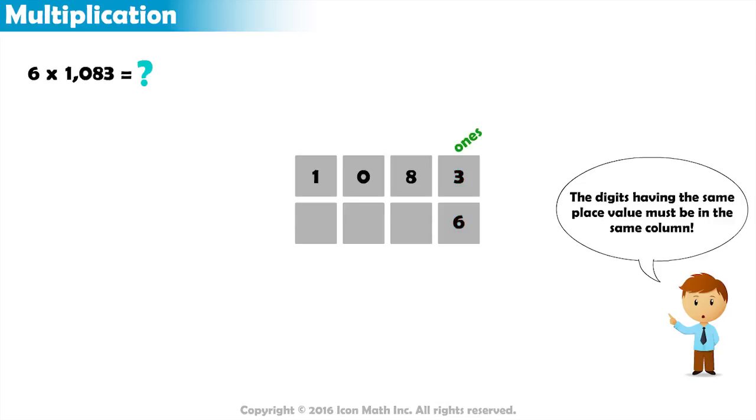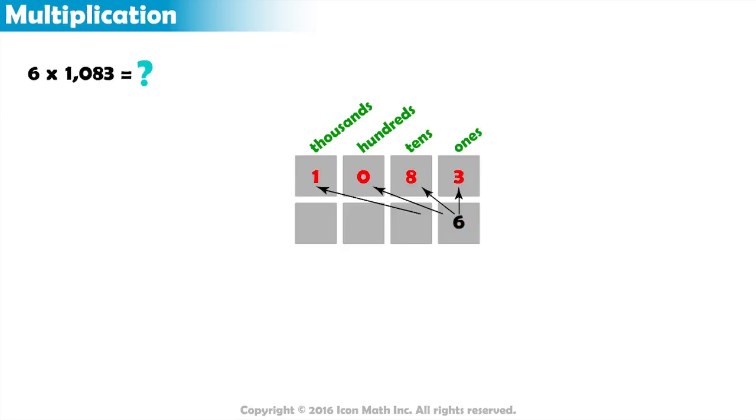So the ones under the ones, the tens under the tens, and so on. Now we multiply 6 by every digit in 1,083 in order from right to left.